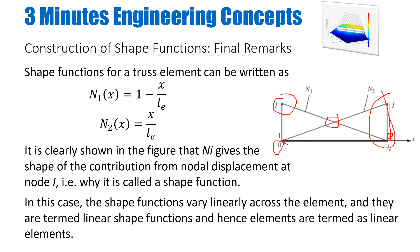The shape functions vary linearly because we assumed a linear polynomial across the element. Therefore these are termed linear shape functions, and this element is termed a linear element. Today I have introduced you to the truss elements and the construction of shape functions and their basic properties: partition of unity and the delta function property. Next time we will move forward and input these things into our kinetic and potential energy to develop the FE equations. Thank you very much for watching.